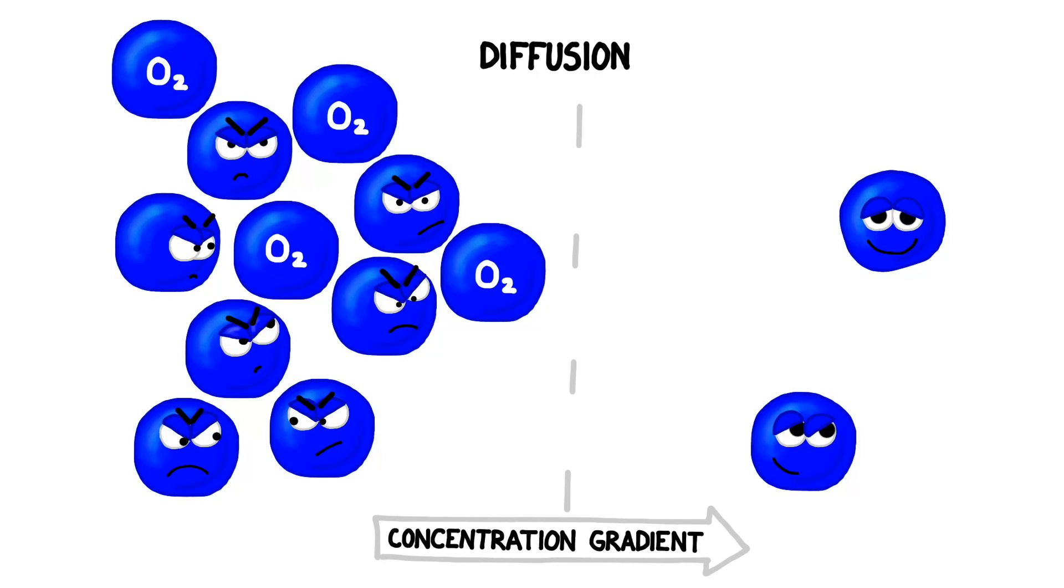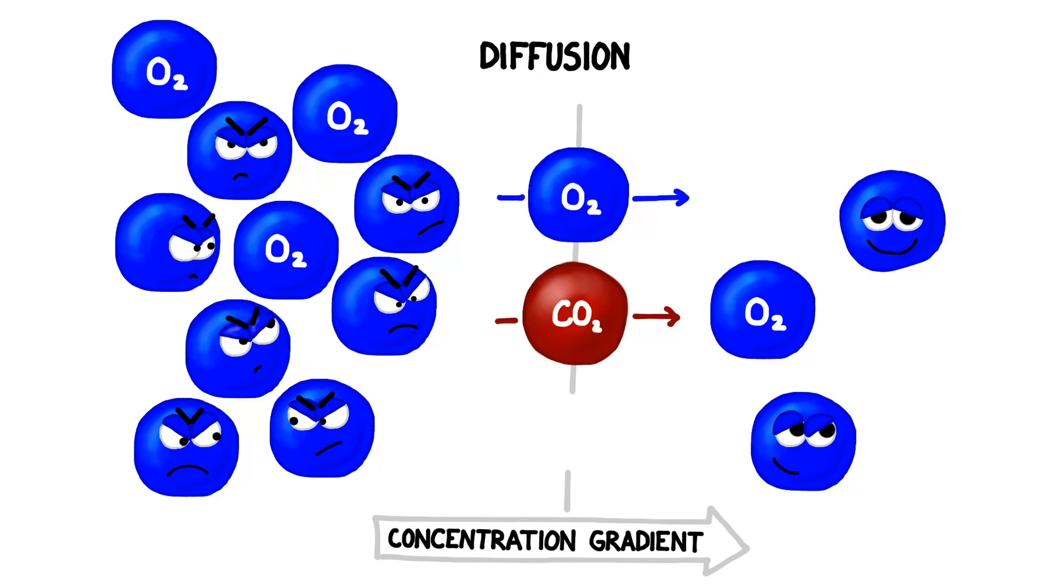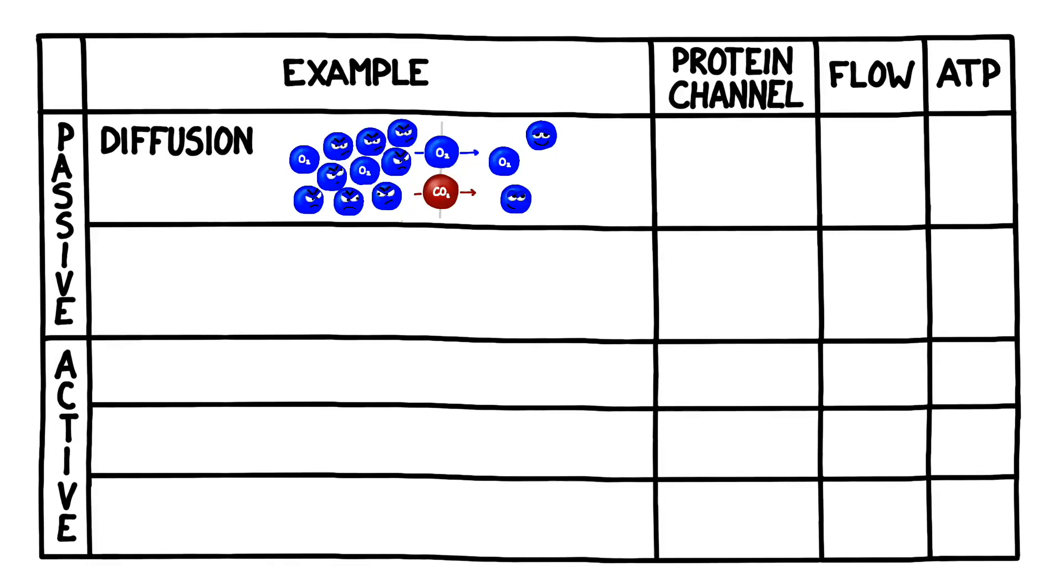But the membrane gets in the way. Luckily, small and non-polar molecules can slip right through the membrane. These include both oxygen and carbon dioxide. To summarize, in diffusion, the particles only flow from high to low concentration, do not use protein channels, and also do not need to spend any ATP to do it.